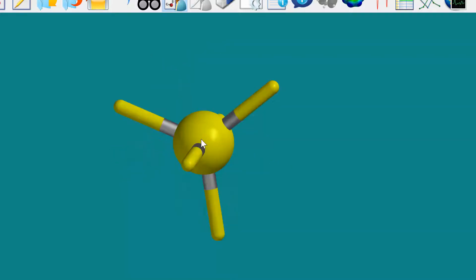So we have something that looks like this. You can see you have one, two, three atoms in one plane, and then you have one on the top, one on the bottom. So you have this trigonal bipyramid.